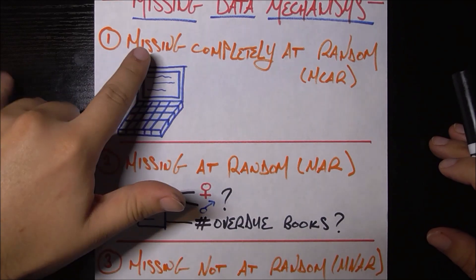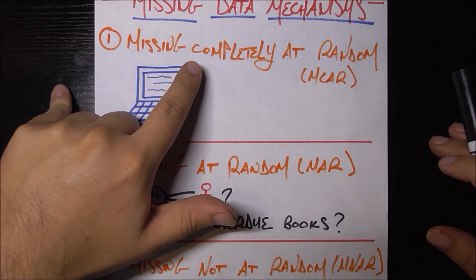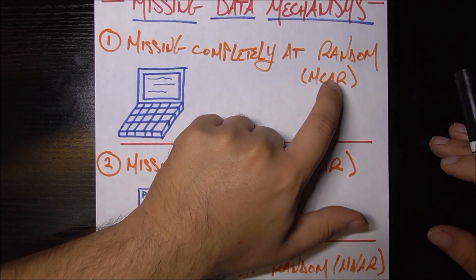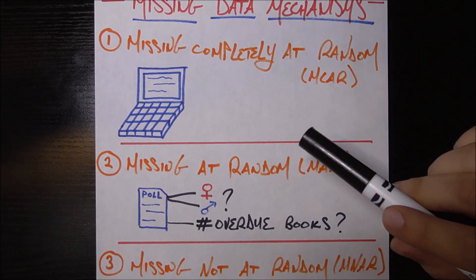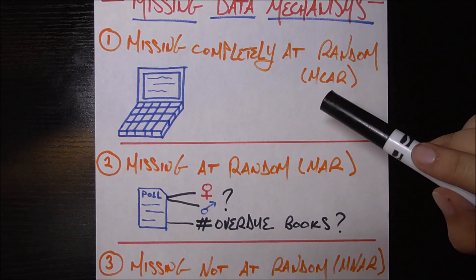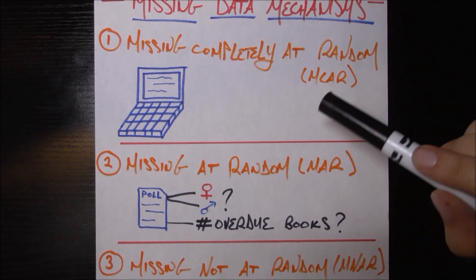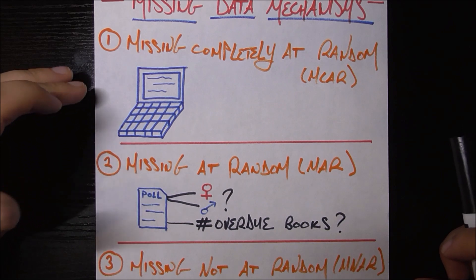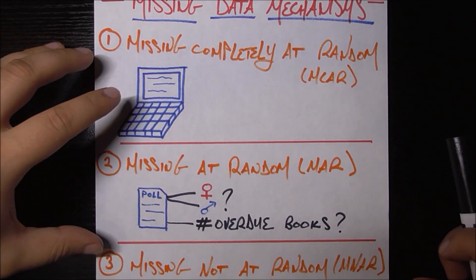So without further ado, the first method is called missing completely at random or MCAR for short. So this is the easiest case by far to think about, because in this case, the data goes missing at a completely consistent rate no matter what. To inform all of our methods here, we'll be going through the same example.